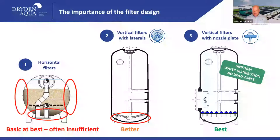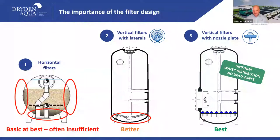Looking at filtration surface area in relation to velocity — how fast we push the water through the bed — the slower the better, the better the media works. Bed depth is also very important for effective filtration, and in a vertical filter we have much more bed depth to work with. As you move from a horizontal to a vertical nozzle plate filter, the hardware becomes better, optimizing the best software, AFM.